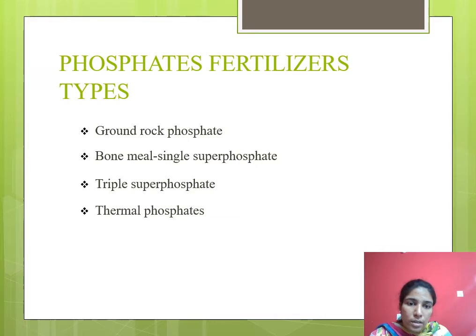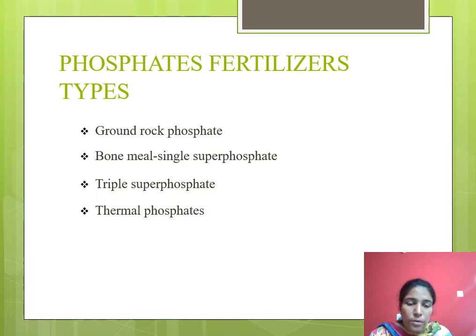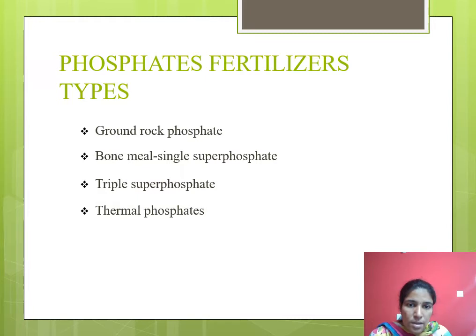Coming to the types of phosphatic fertilizers, there are four types: ground rock phosphate, bone meal or single superphosphate, triple superphosphate, and thermal phosphate. These four are the important types of phosphatic fertilizers, and they may be manufactured in other industries.